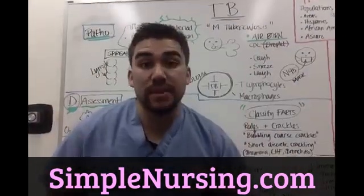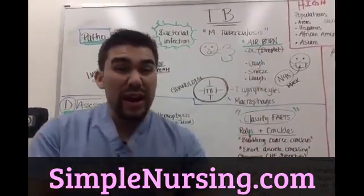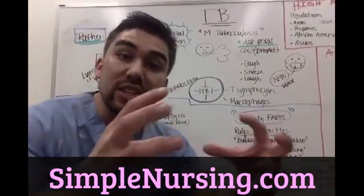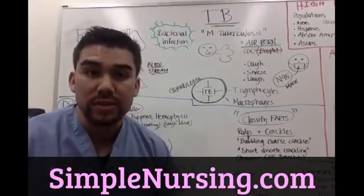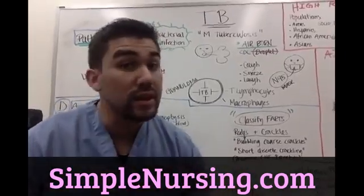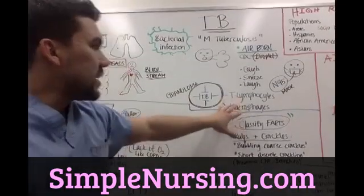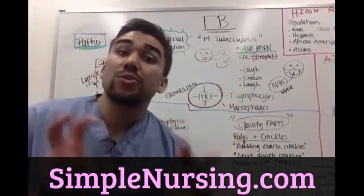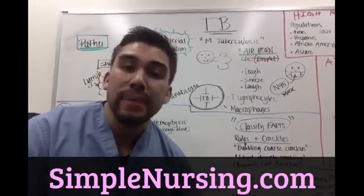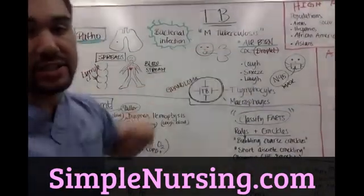Your body's immune system is alerted, and those B cells now want to make antibodies against it and spray this new bacteria with tags that say, 'Hey everyone, let's go attack this tuberculosis, this invader.' What your body then does is alert the T cells, which are your natural-born killers, and these T cells go and attack tuberculosis directly.